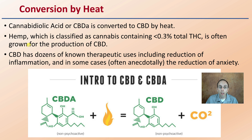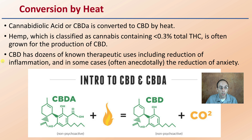Hemp, which is classified as cannabis containing less than 0.3% total THC, is often grown for the production of CBD or cannabidiol. CBD has dozens of known therapeutic uses, including the reduction of inflammation, and in some cases — often anecdotally — the reduction of anxiety. Here we're seeing CBDA; we're adding heat, and that generates CBD and carbon dioxide as a byproduct.